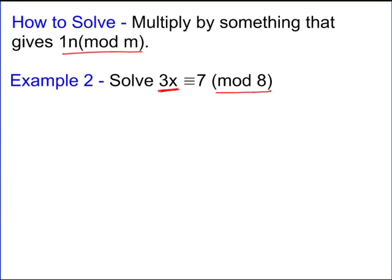2 times 3 gives you 6. That's just 6 mod 8. 3 times 3 is 9, which equals 1 mod 8. So, if I multiply both sides of this equation by 3, I get 9x equivalent to 7 or 21 mod 8.